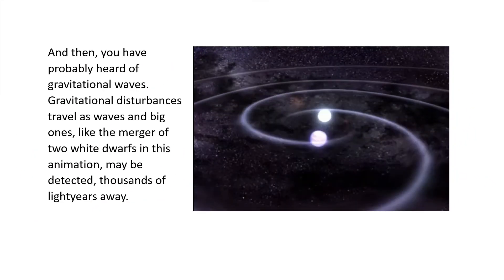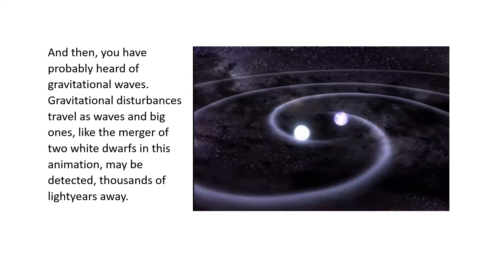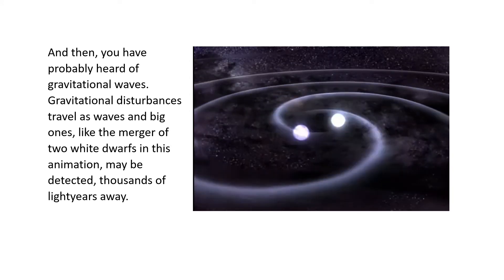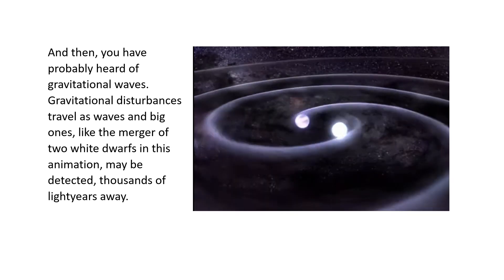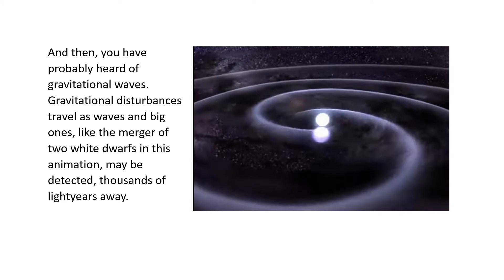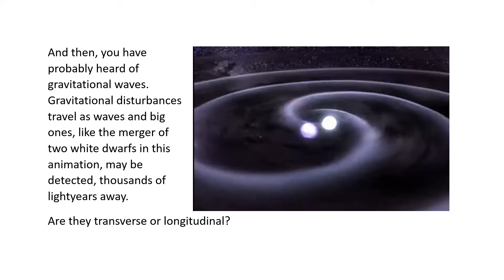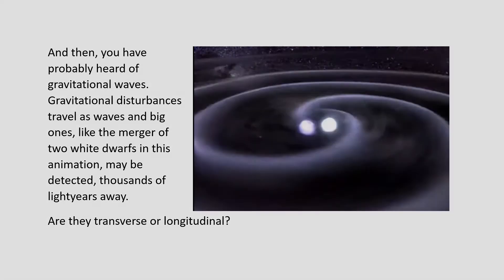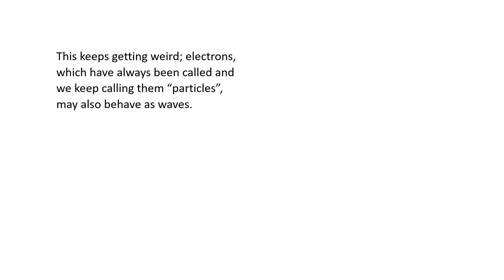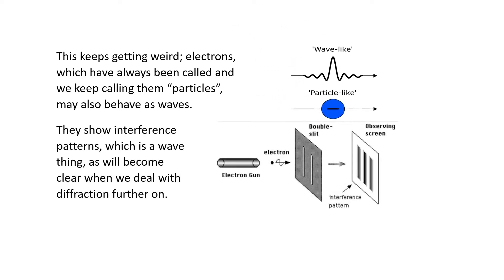You've probably heard of gravitational waves. Gravitational disturbances travel as waves, and big events like the merger of two white dwarfs may be detected millions of light years away. Are they transverse or longitudinal? Electrons, always called particles, may also behave as waves — they show interference patterns, which is a wave phenomenon, as will become clear when we deal with diffraction further on.